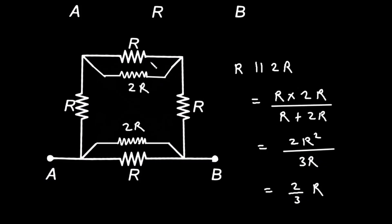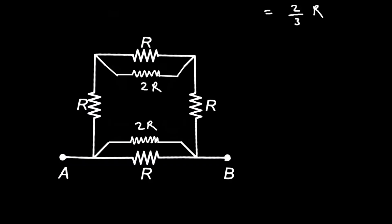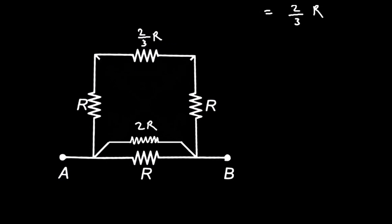So we can replace these two resistances with 2/3 R. Similarly, these two are also the same, so they will also be 2/3 R. So it will be 2/3 R.